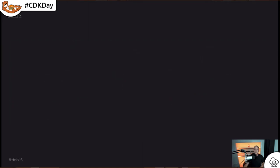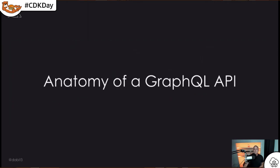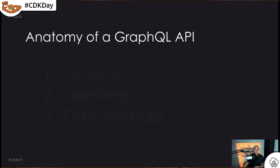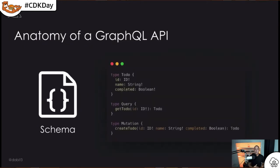A GraphQL API consists of three main parts: a GraphQL schema, resolvers, and data sources. The schema is essentially all of the data and all of the operations available for your API. For a simple to-do app, we might have a type of to-do with a few different fields.